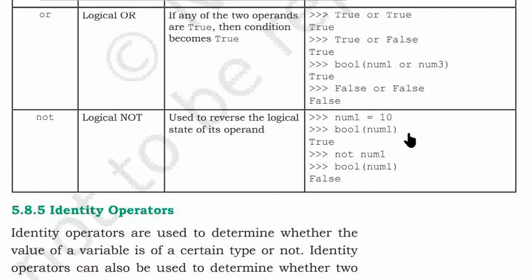num1 equals 10. bool(num1) is True because num1 value is 10, and 10 is true because it is non-zero. not num1 becomes False, so bool(num1) is False, so final output is False.